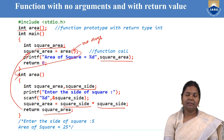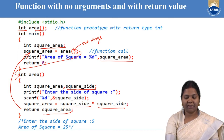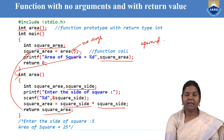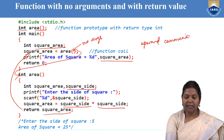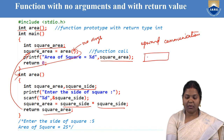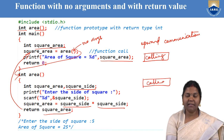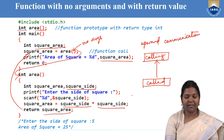The type of communication that happens here is called upward communication. The calling function does not pass any argument, but the called function is returning some value to the calling function. This is called upward communication.